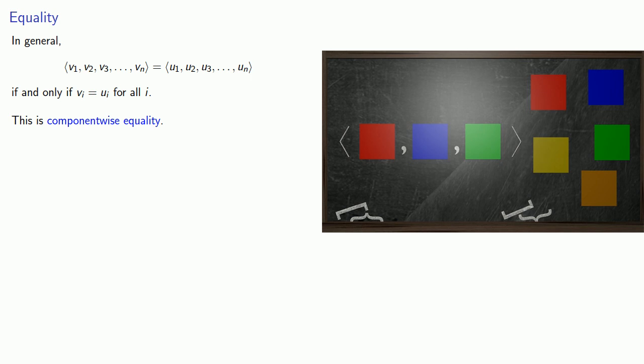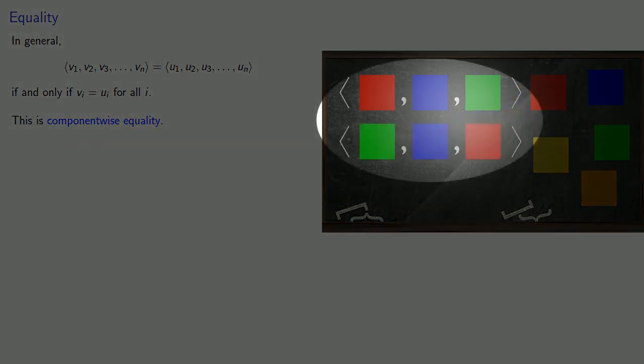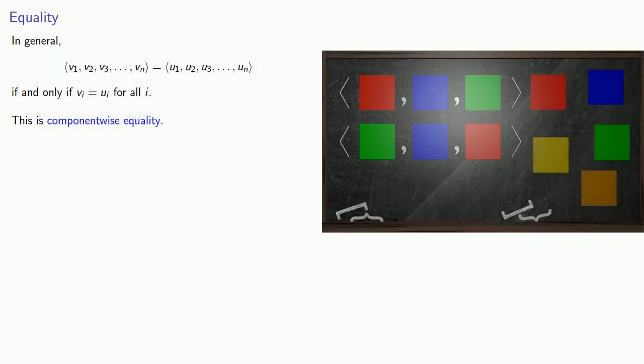What this means is that two tuples are equal only if they have the same elements in the same order. So even though these two tuples both include red, blue, and green, they are in a different order, and so they are different tuples.